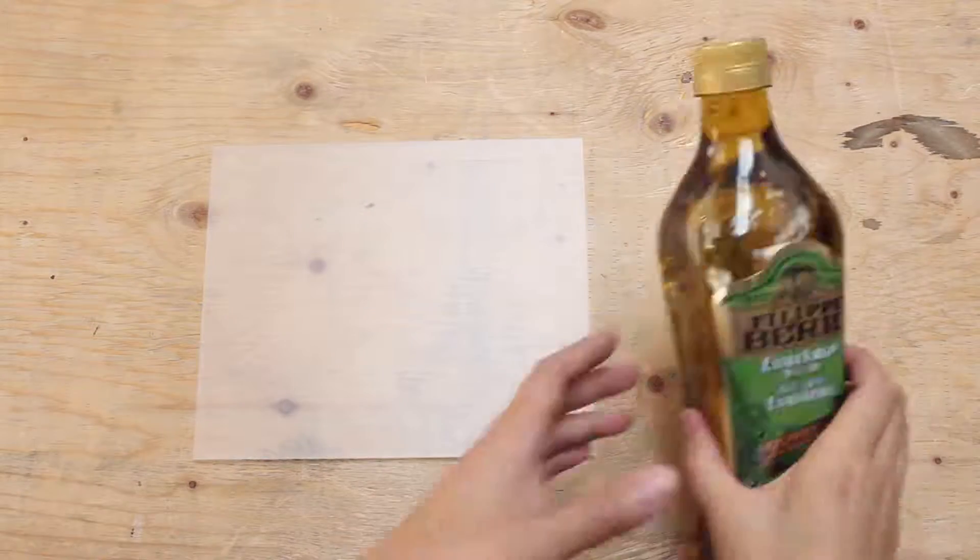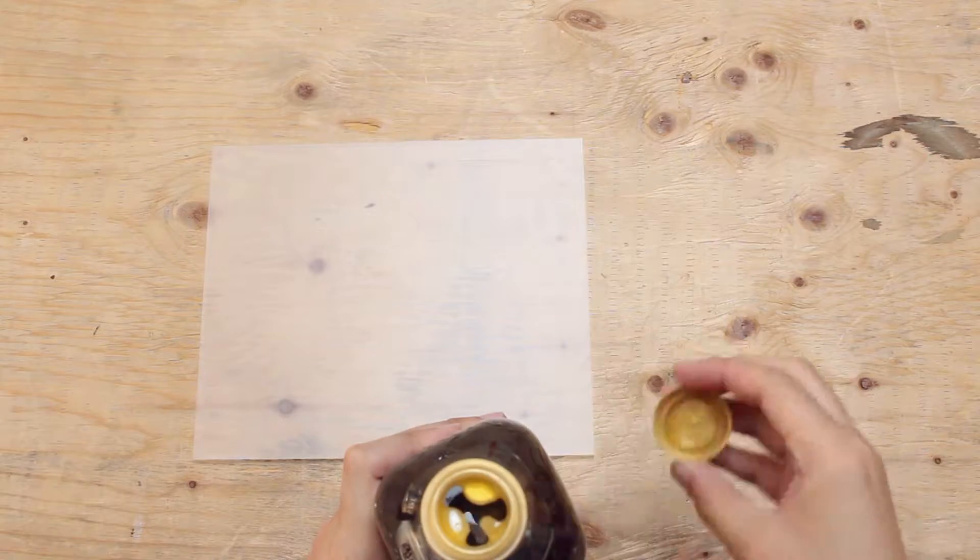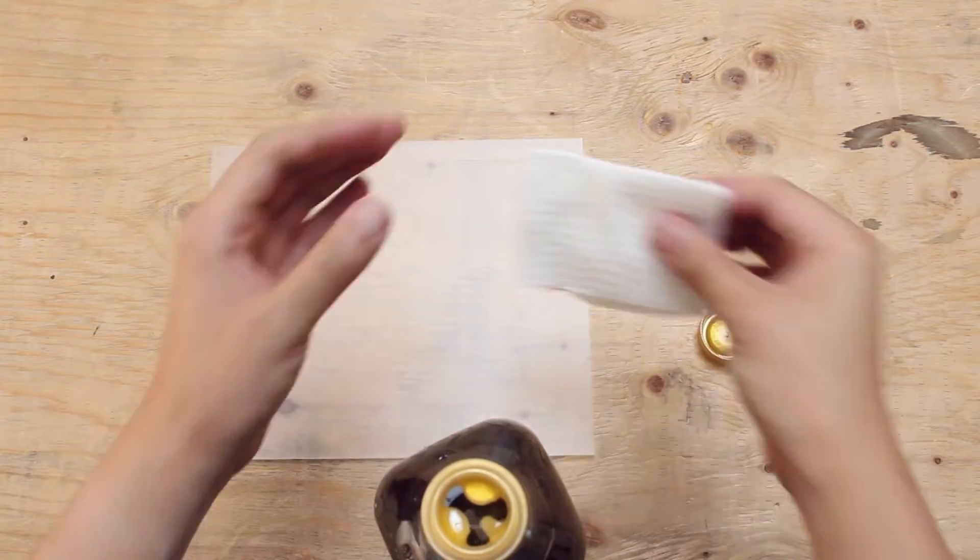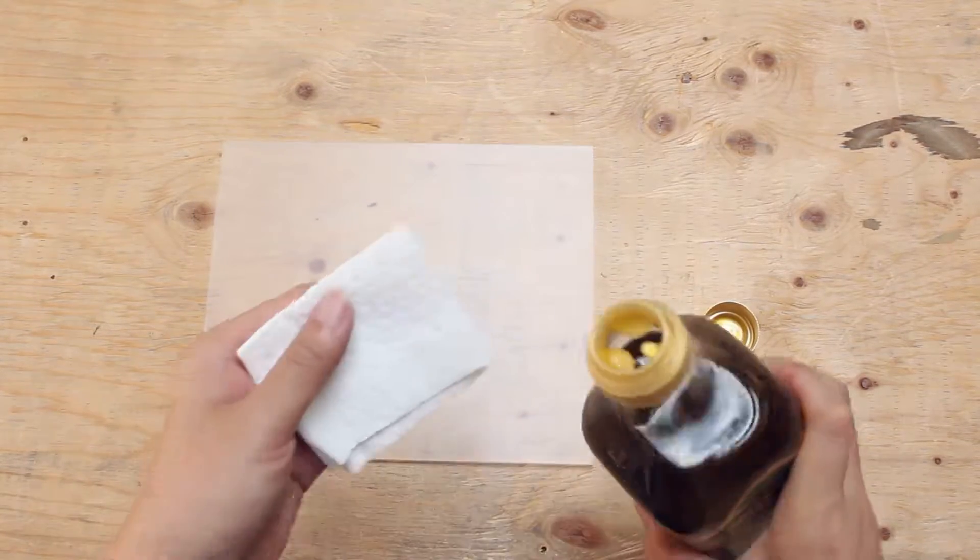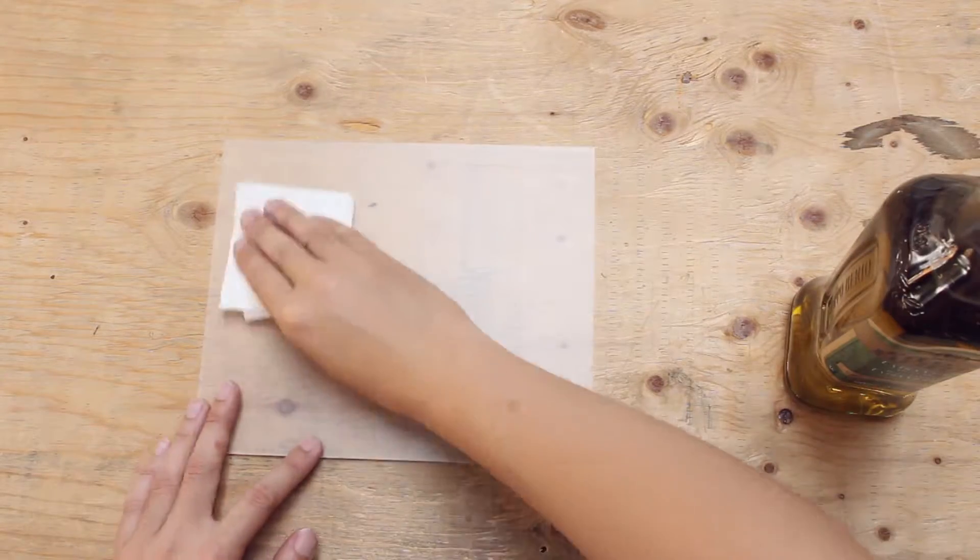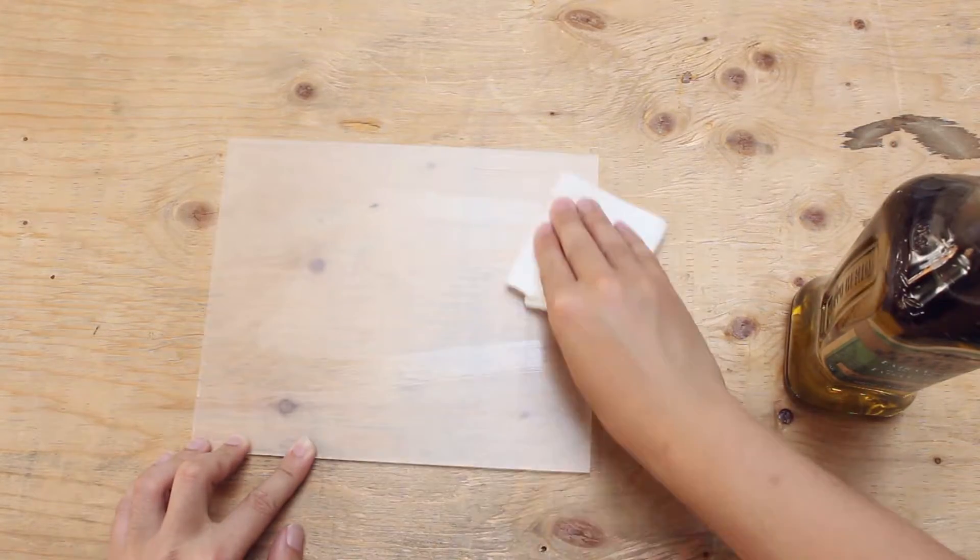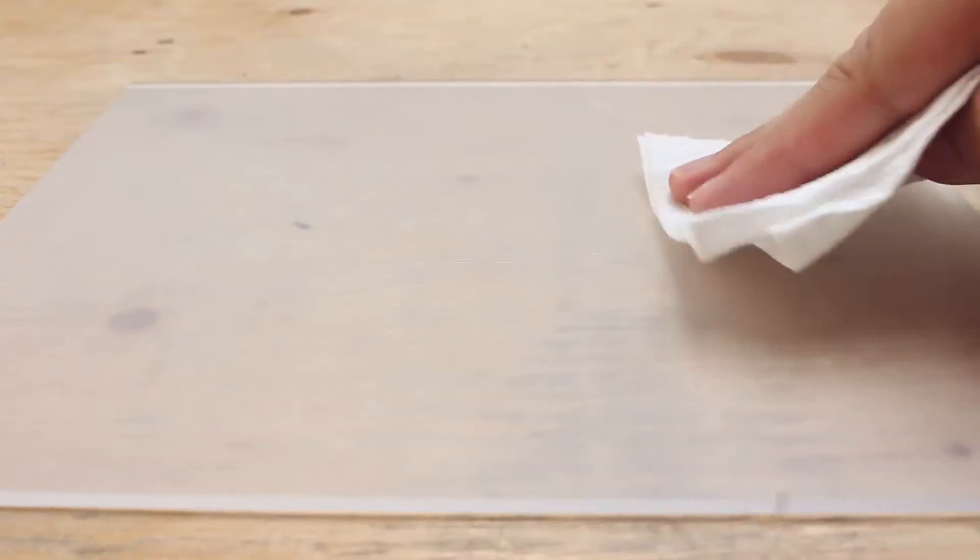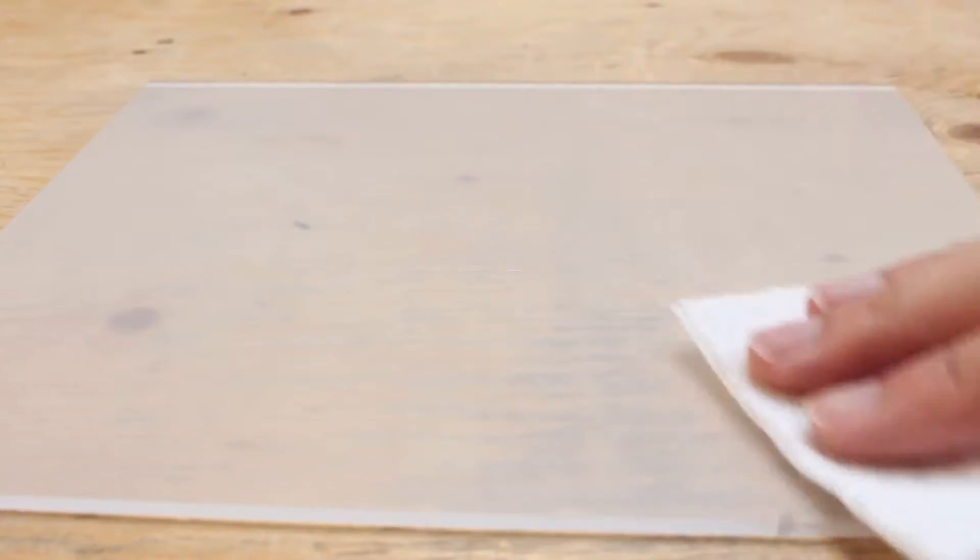Let's jump to it. We will be applying the same process we did with the machine oil on the acrylic sheet. Let's pour the olive oil onto the piece of paper towel and then spread it. Let the oil soak into the acrylic sheet for five minutes and then wipe it off.